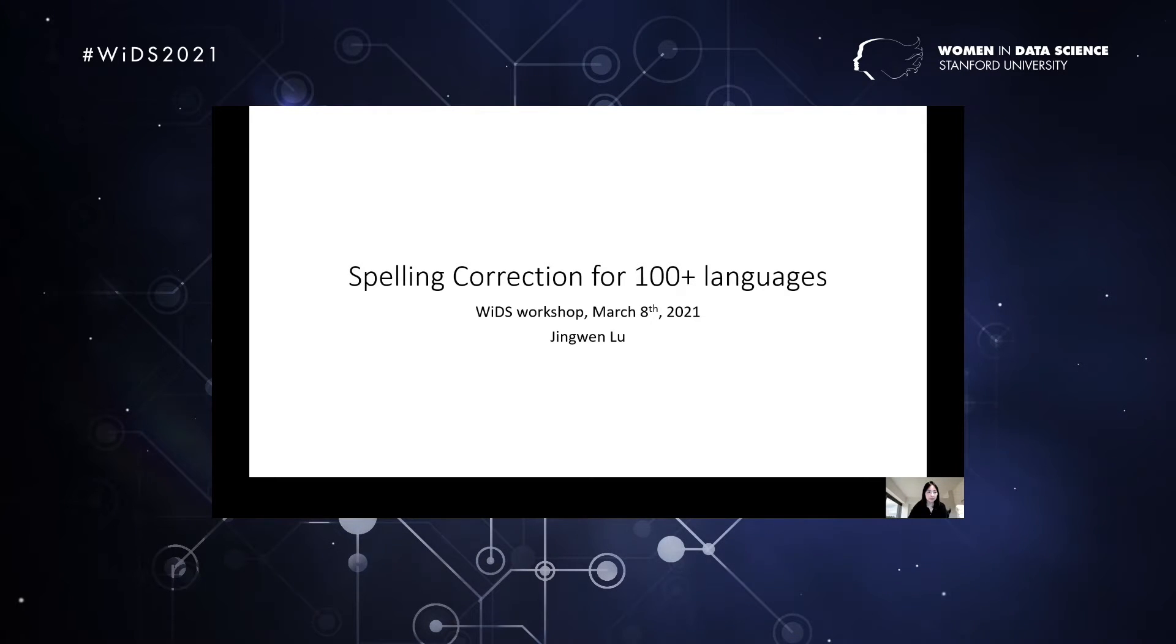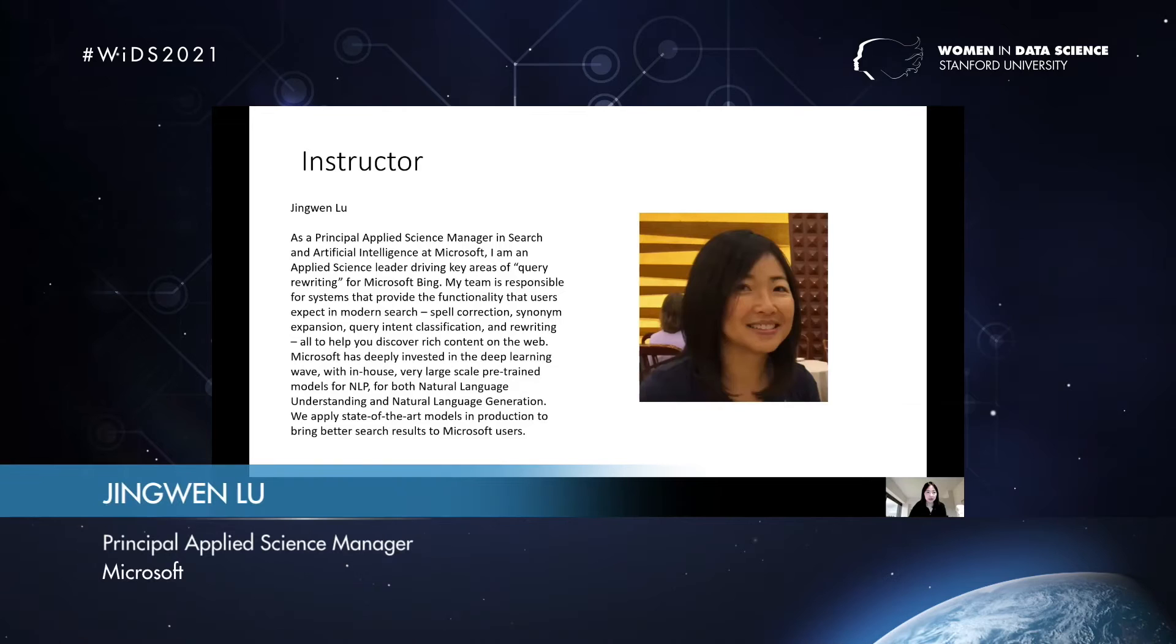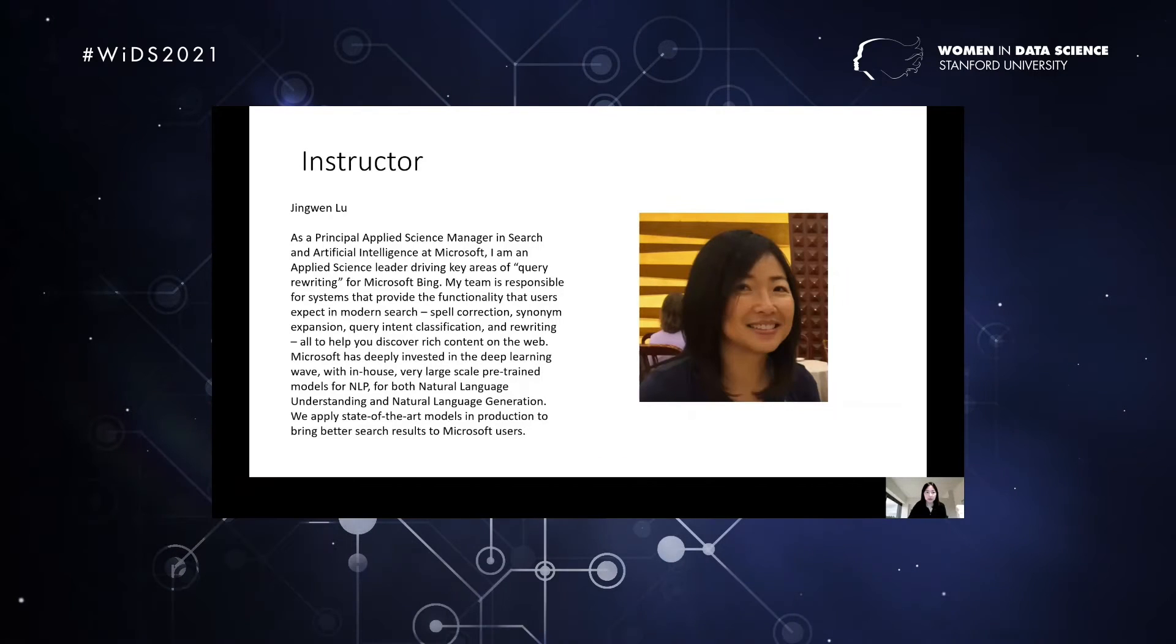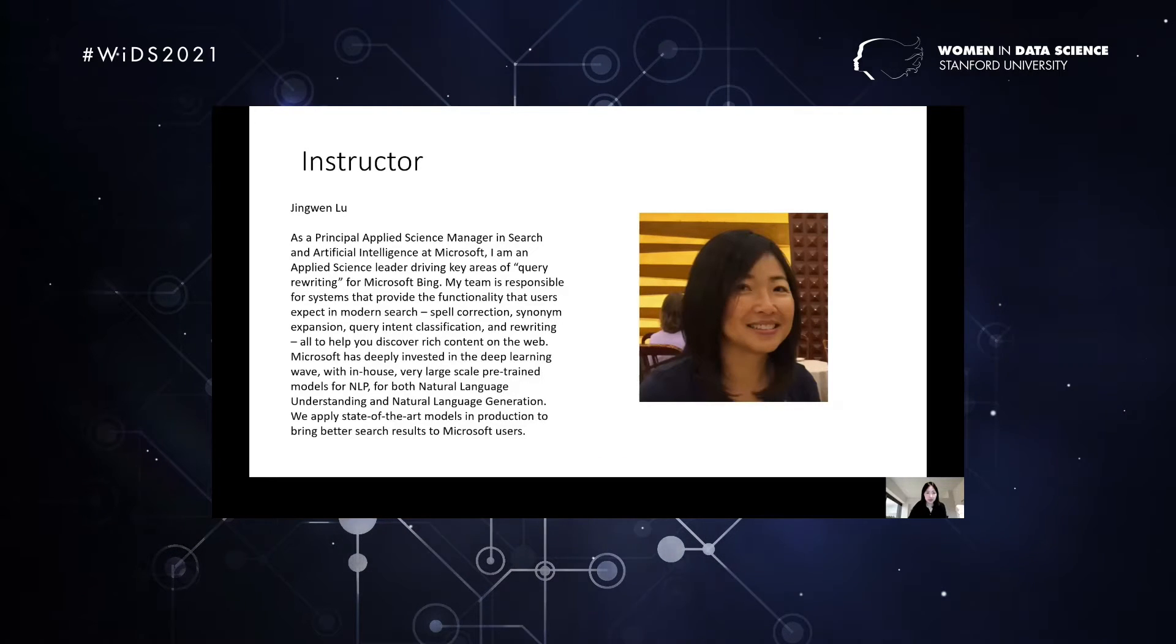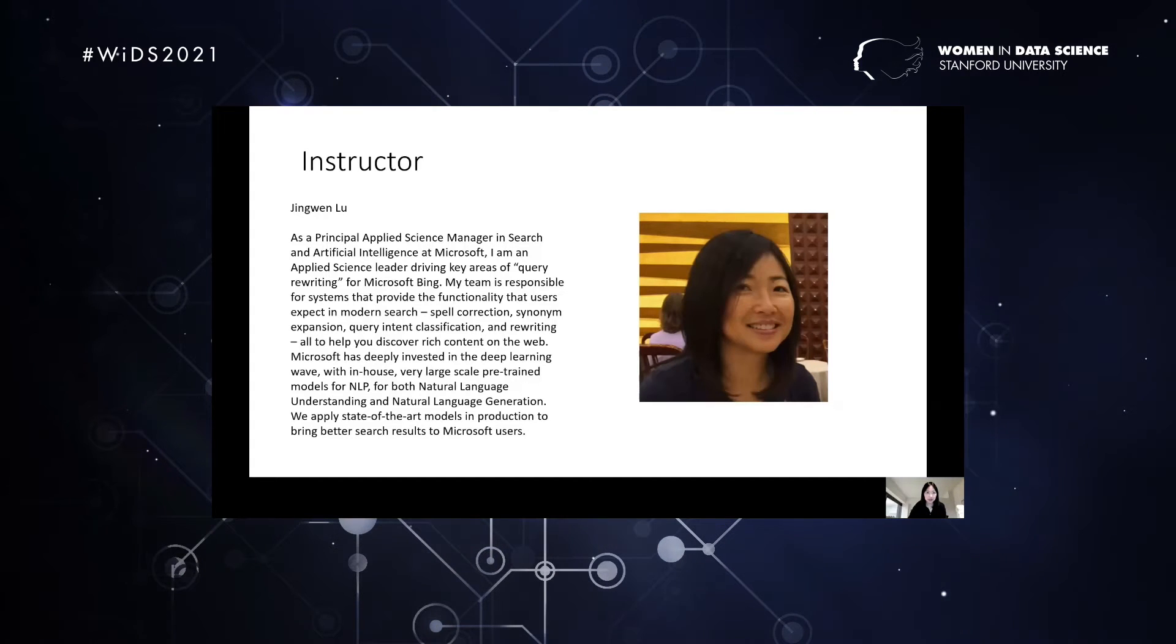I'm Jingwen Liu. First, a quick intro of myself. I'm a principal applied science manager in search and artificial intelligence at Microsoft. I have been an applied science leader driving key areas of query writing for Microsoft Bing. My team is responsible for systems that provide the functionality that users expect in modern search, such as spelling correction, synonym expansion, query intent classification, and rewriting.